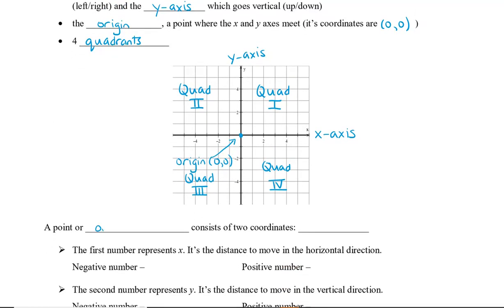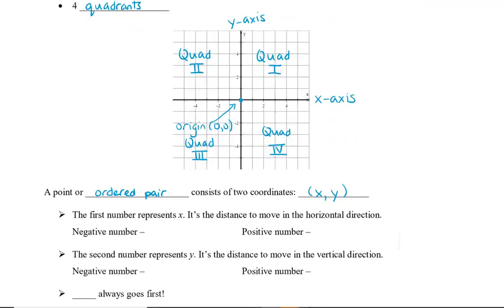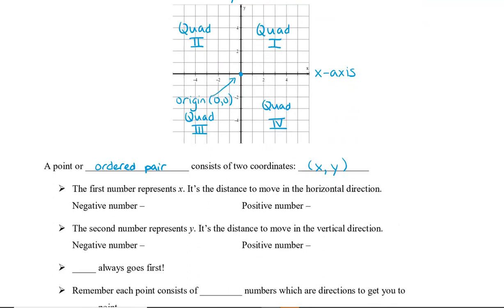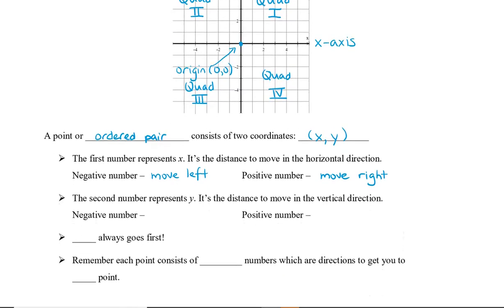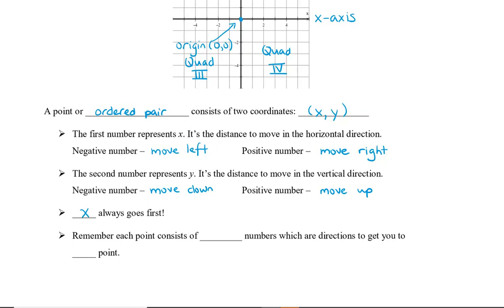A point, or an ordered pair, can be graphed on the Cartesian plane and consists of two coordinates. The first coordinate we call x and the second coordinate we call y. The first number represents x — it's the distance we move in the horizontal direction. If it's negative, we move left; if positive, we move right. The second number, y, is the distance we move in the vertical direction. If negative, we move down; if positive, we move up. Remember, we always start at the origin, x always goes first, and each point consists of two numbers which are directions to get you to only one point.